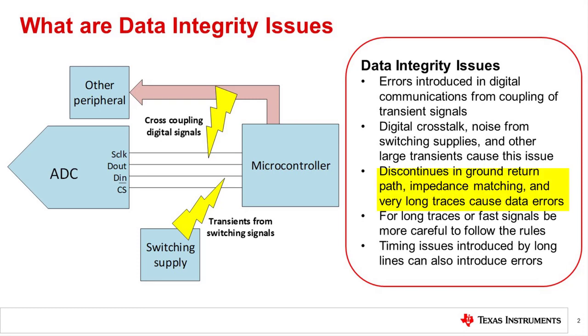This error can be from a noise source such as a switching supply which can have a fast periodic transient current. The noise source could also be from other digital signals cross-coupling to the communication line. Discontinuities in the ground return path and impedance mismatches can introduce emissions, overshoot, and ringing that introduce unwanted coupling of digital signals.